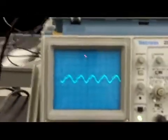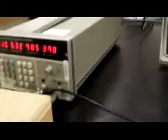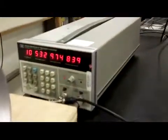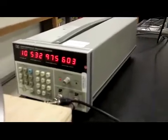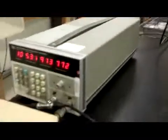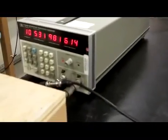I can check that against the individual frequencies by first covering one of these horns and seeing what the frequency is. It's just about 10.533 and then if I cover the other one instead I get a frequency of about 10.532.